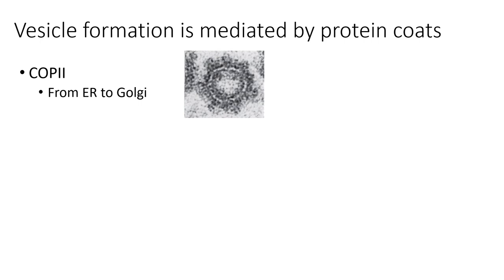The first protein coat we'll talk about is called the COP2 coat. This coat helps form vesicles that are traveling from the ER to the Golgi. This is a normal part of our secretory pathway for secreted or membrane proteins — remember those proteins are getting translated in the ER, starting to get modified in the ER, and then have to get sent to the Golgi to finish up processing before they eventually get to the cell membrane.